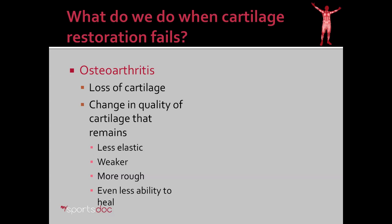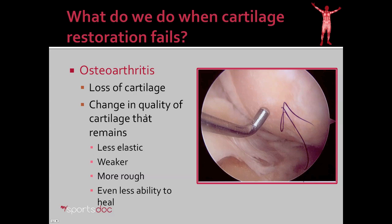The remaining cartilage is less elastic, it's weaker, it's more rough, and even has less ability to heal. And here's an arthroscopic picture of that. Here you can see the cartilage is completely gone and what we have is bone on bone arthritis.